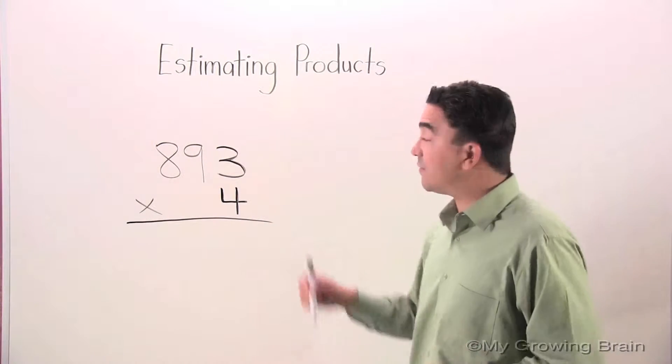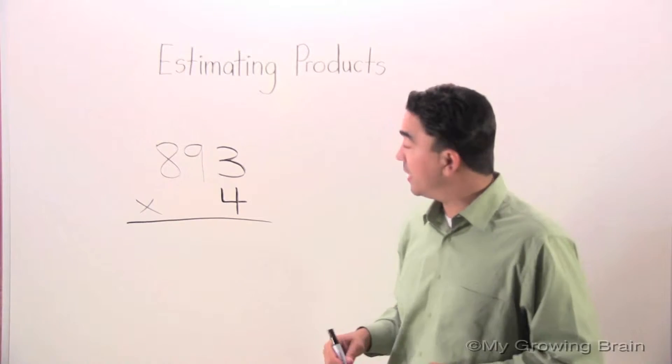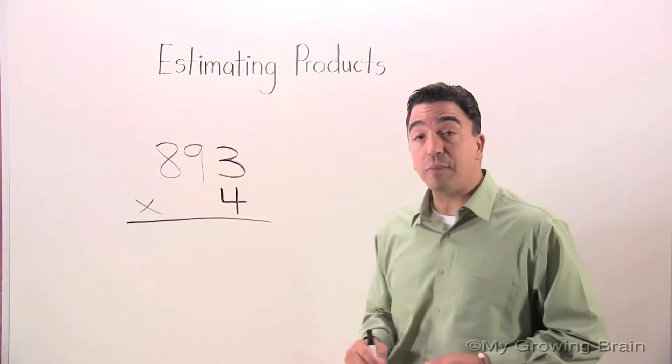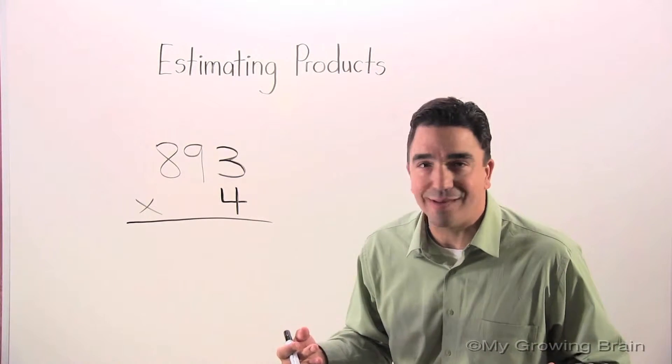On the board you can see I have a three digit multiplication problem: 893 times 4. Now if I were to do this problem I'd get an actual answer, but that's not our lesson today.